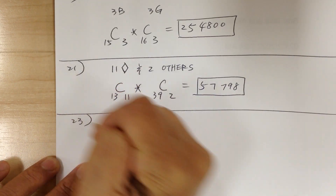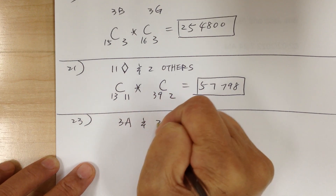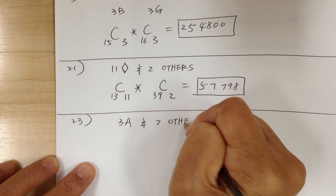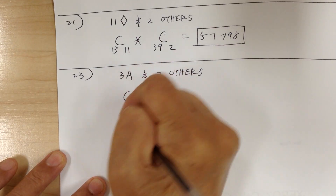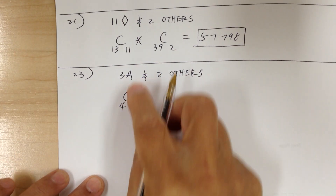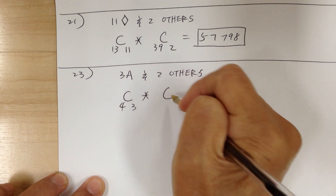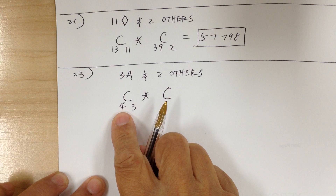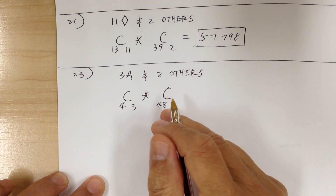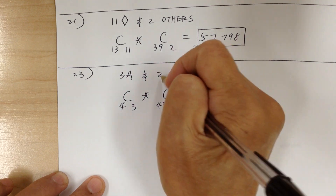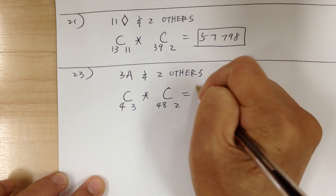Number 23: you want to get three aces and two others. In a deck of cards there are four aces, and you want to choose three. Multiply — there are four aces, so there are 48 non-ace cards, and you want to choose two. Work it out and you get 4,512.